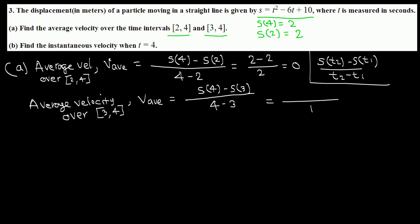We evaluate s(4) which is 2, and s(3) by replacing t with 3, which comes out to be 1. So s(4) minus s(3) is 2 minus 1, which is 1, over 1 — that's 1 meter per second. That completes Part A.